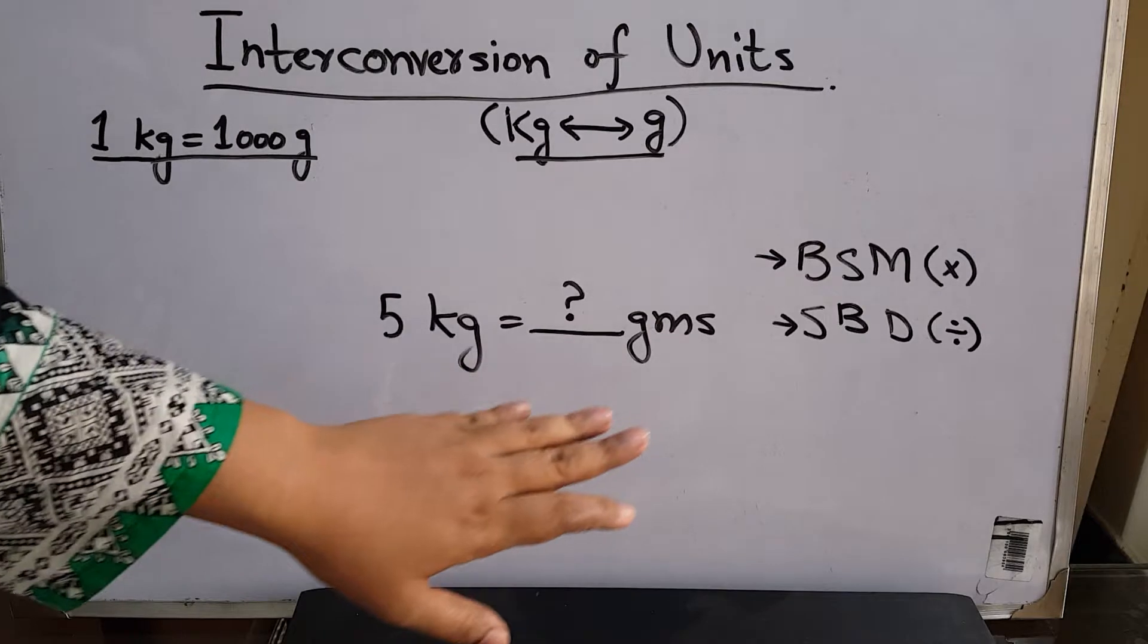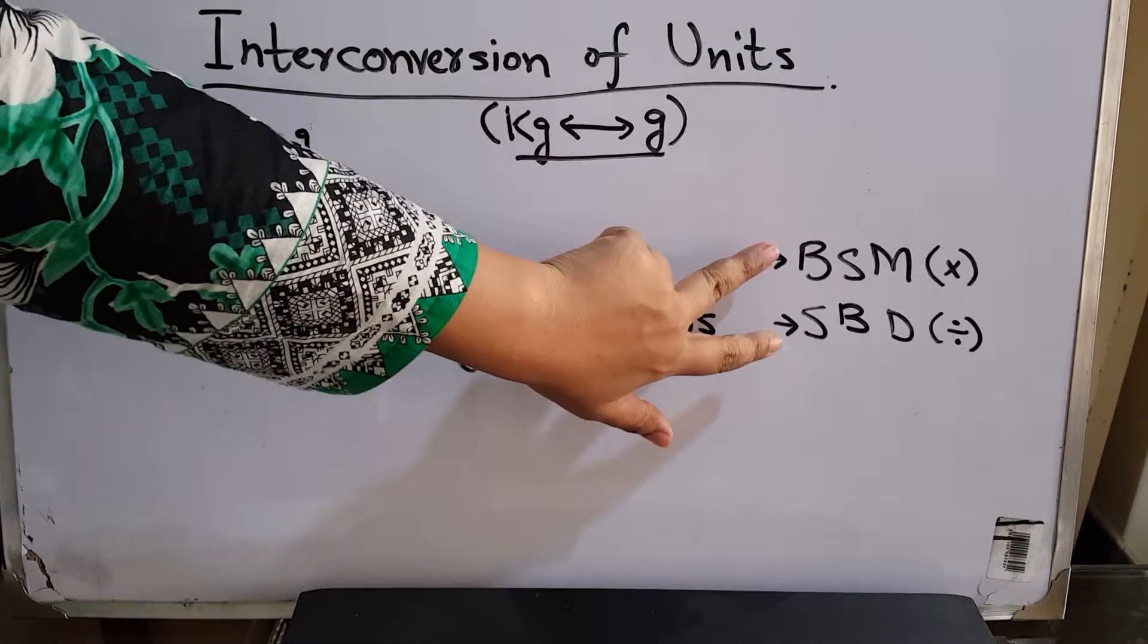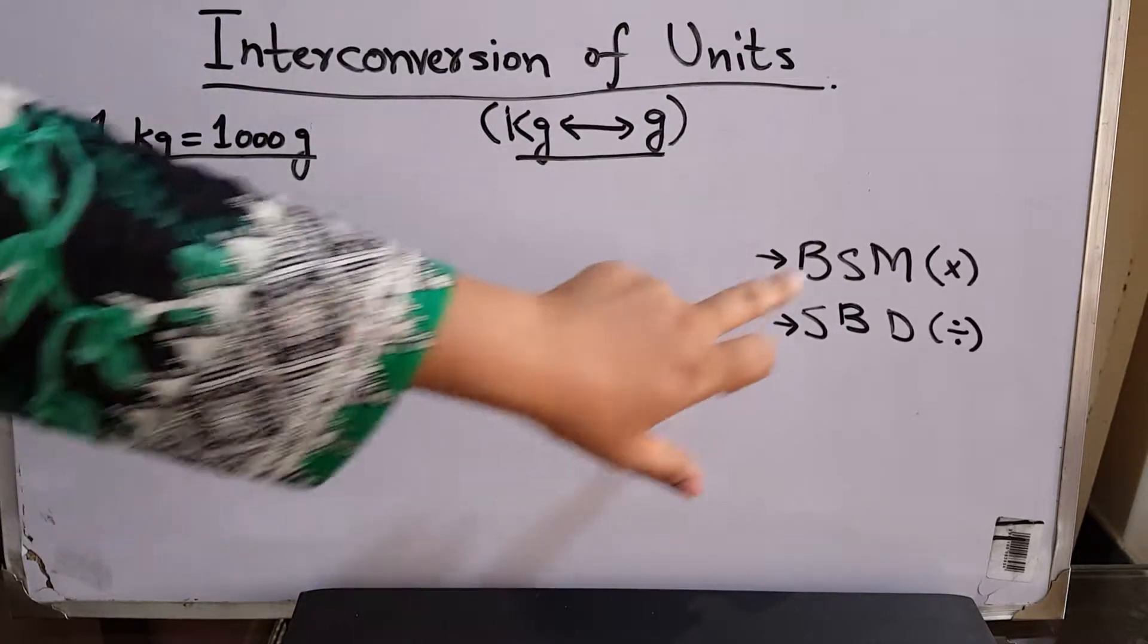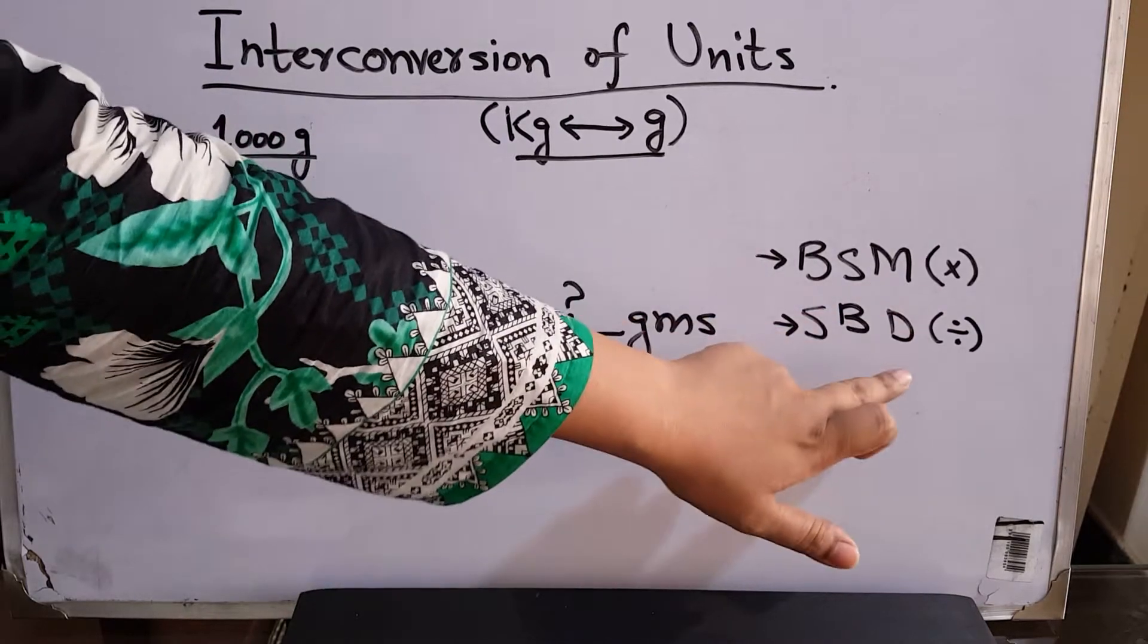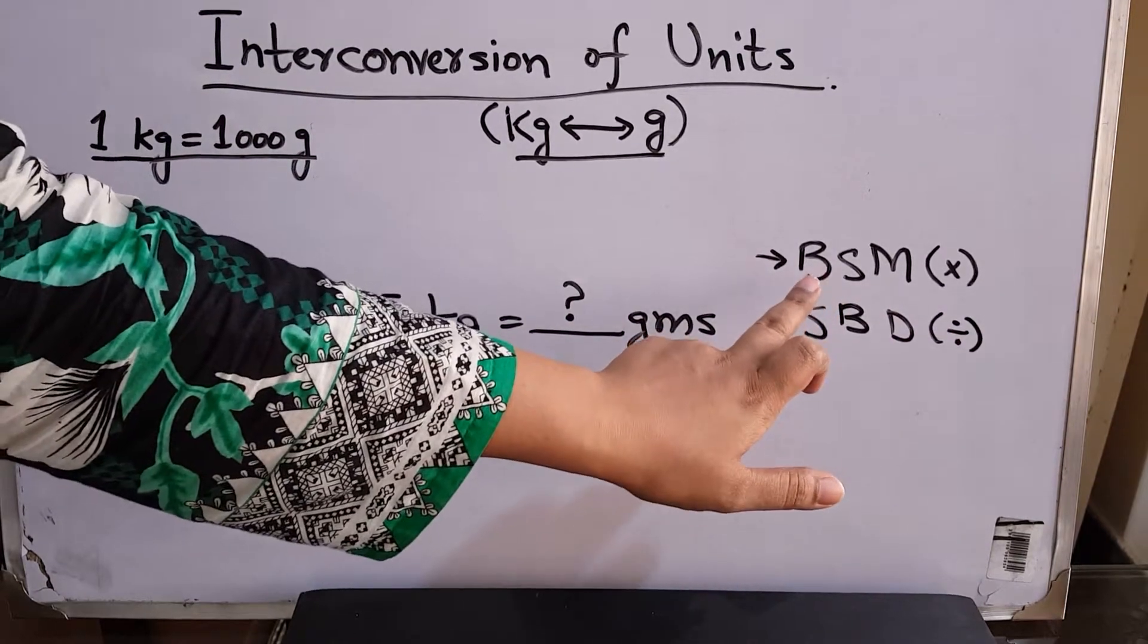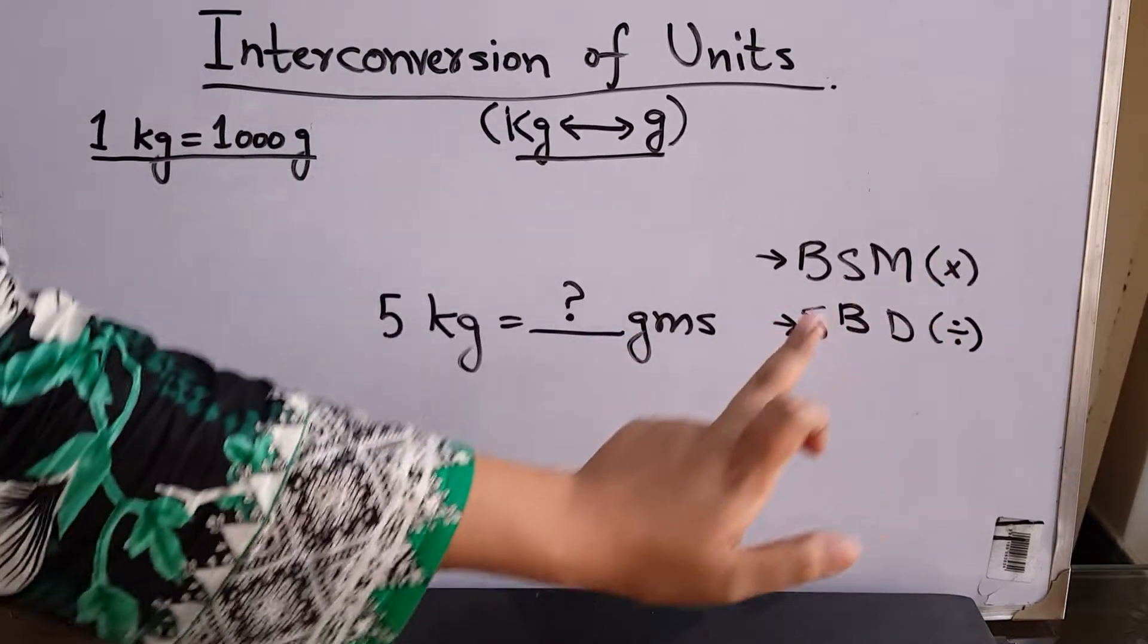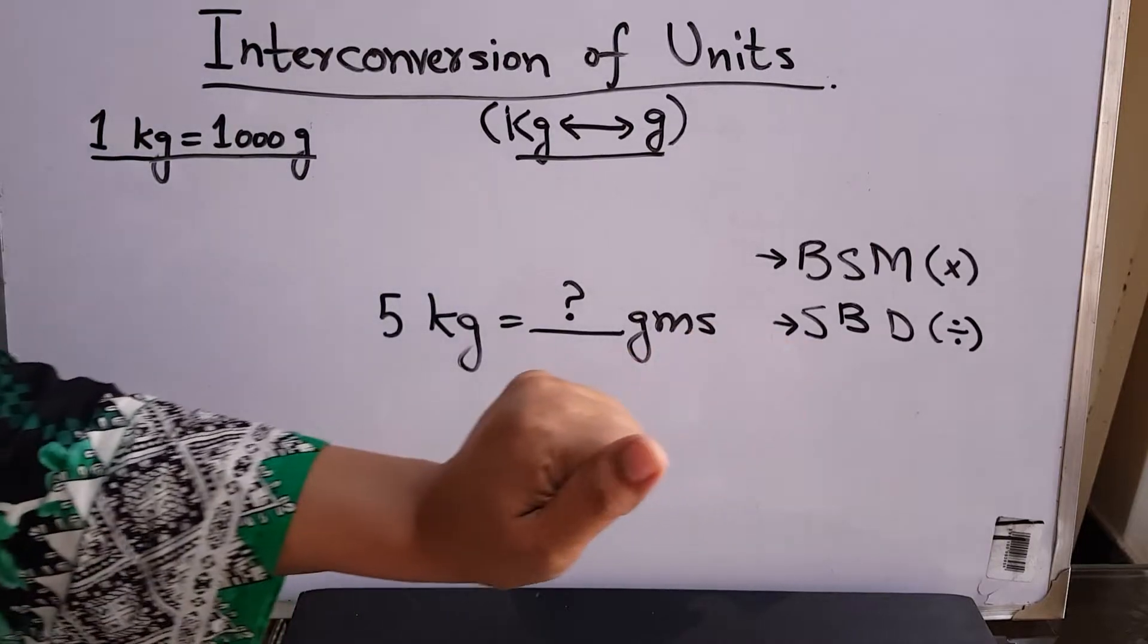When converting kilograms to grams or grams to kilograms, students get confused about whether to multiply or divide. To help with this, I came up with these two terms: BSM and SBD. B stands for big, S stands for small, M for multiplication, and D for division. So when you're going from bigger to smaller units, you multiply. When going from smaller to bigger units, you divide.